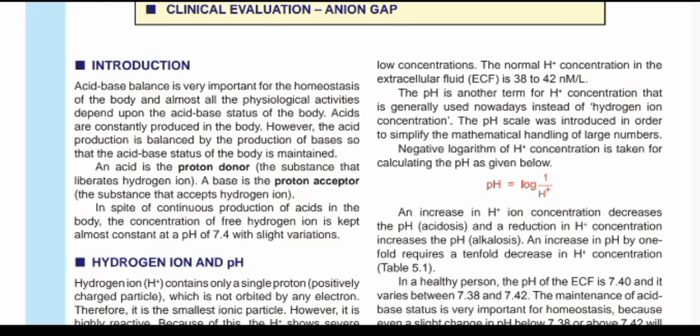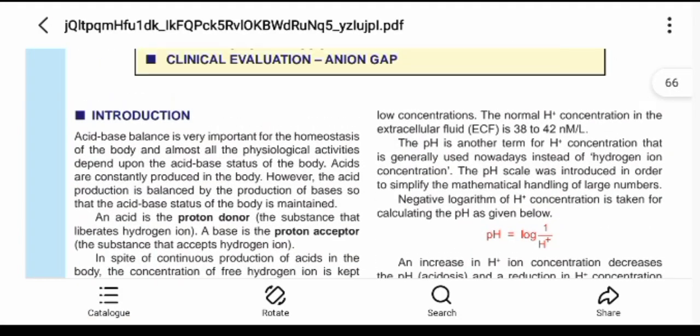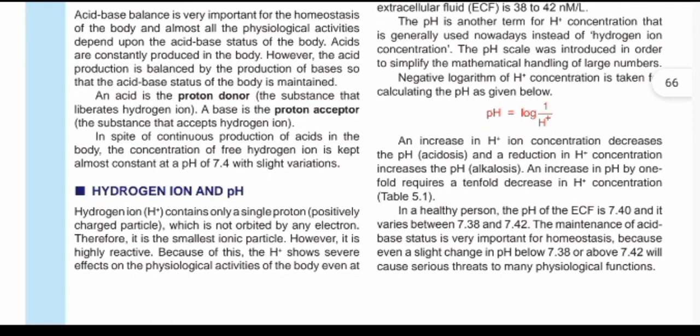An acid is a substance that produces hydrogen ions as the only positive ion when dissolved in a clear solution — not necessarily water, since there may be other aqueous solutions. A base is the opposite: the one that produces only hydroxide ions as the only negative ion when dissolved in water or a clear solution.